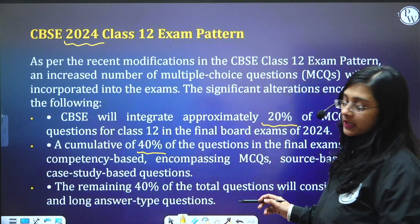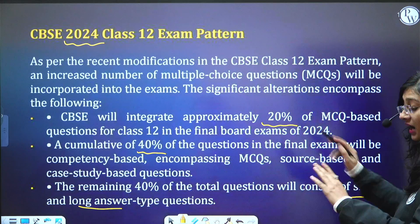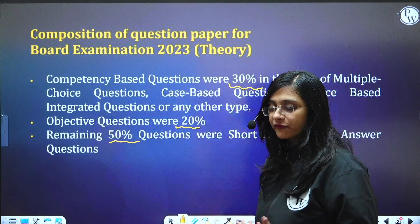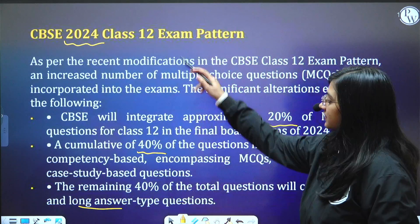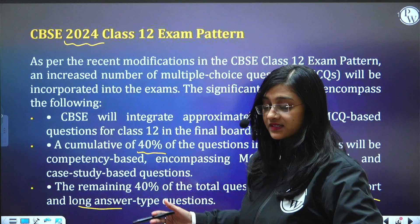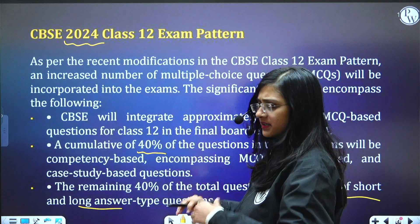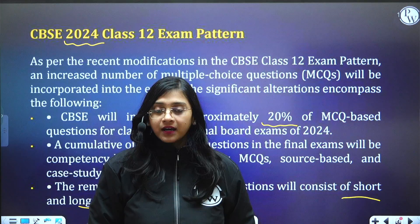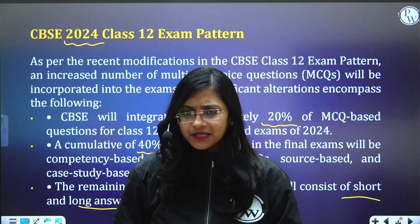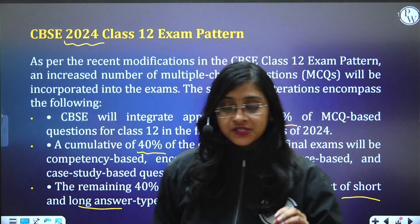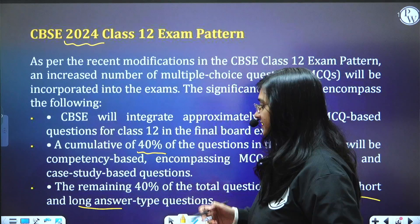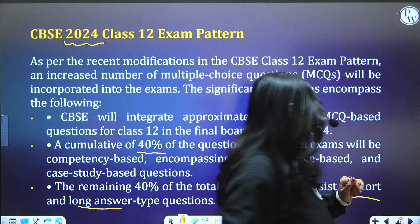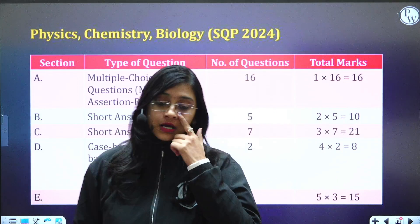The remaining 40 percentage of total questions are going to be long answer and short answer, whereas last year it was 50 percentage. They have reduced long and short answer type questions by 10 percentage, and that remaining 10 percentage has shifted to competency-based and case study-based questions. The difficulty level may be a little more this year, because students generally find case-based and competency-based questions more difficult.